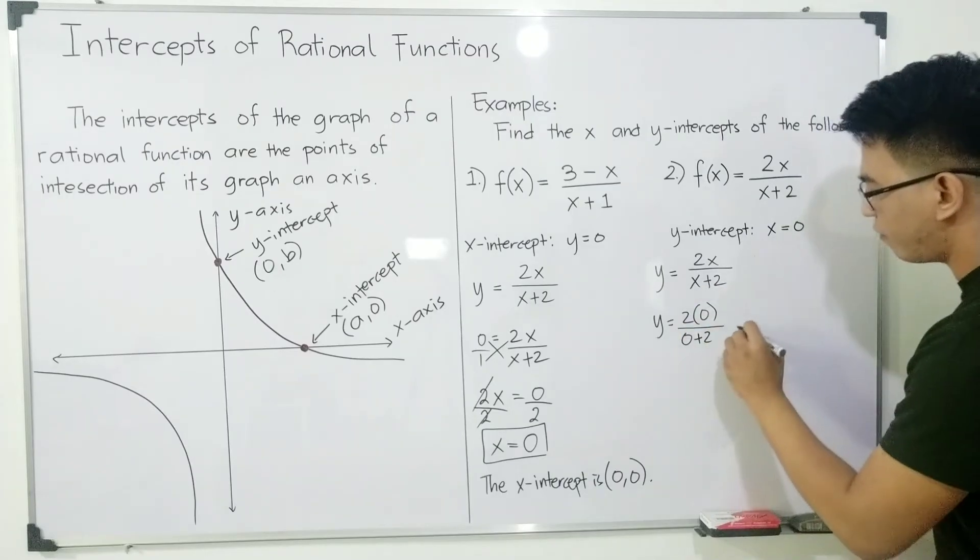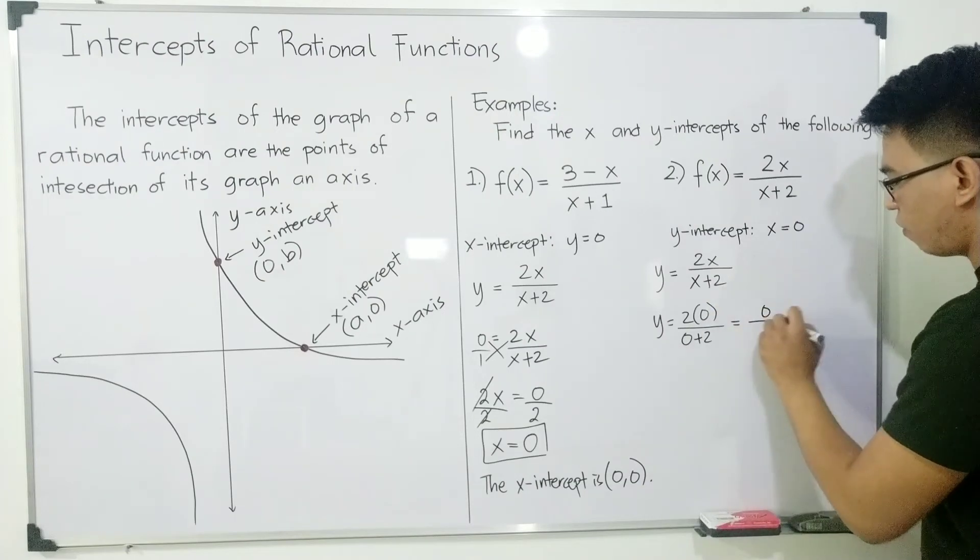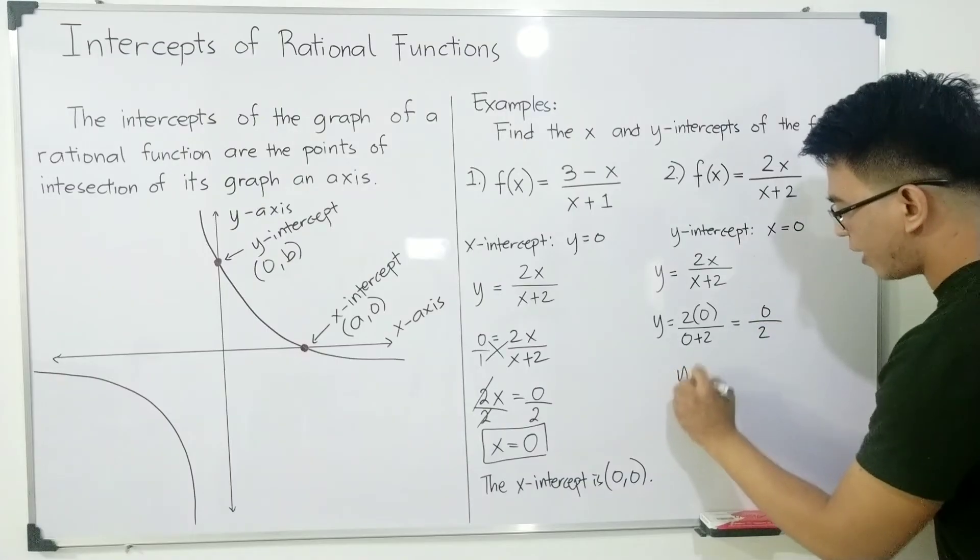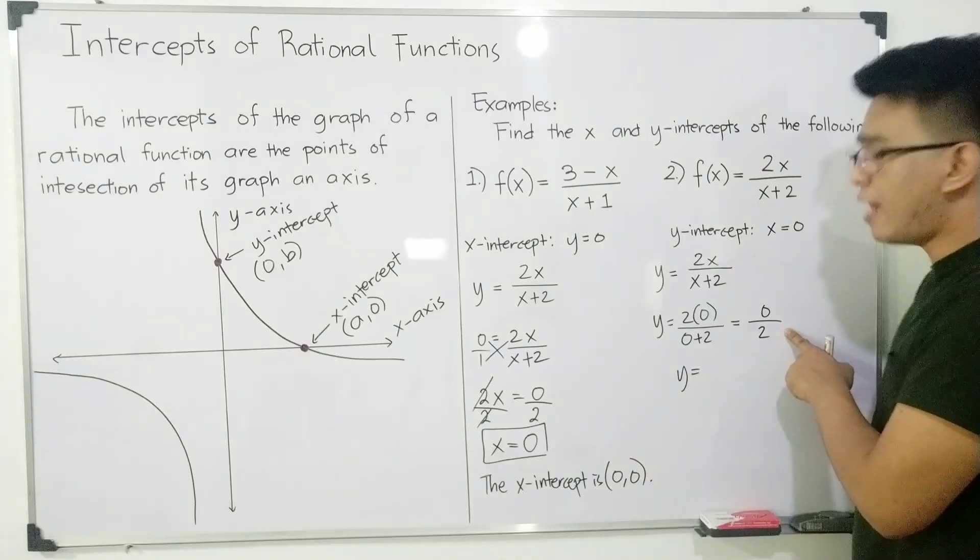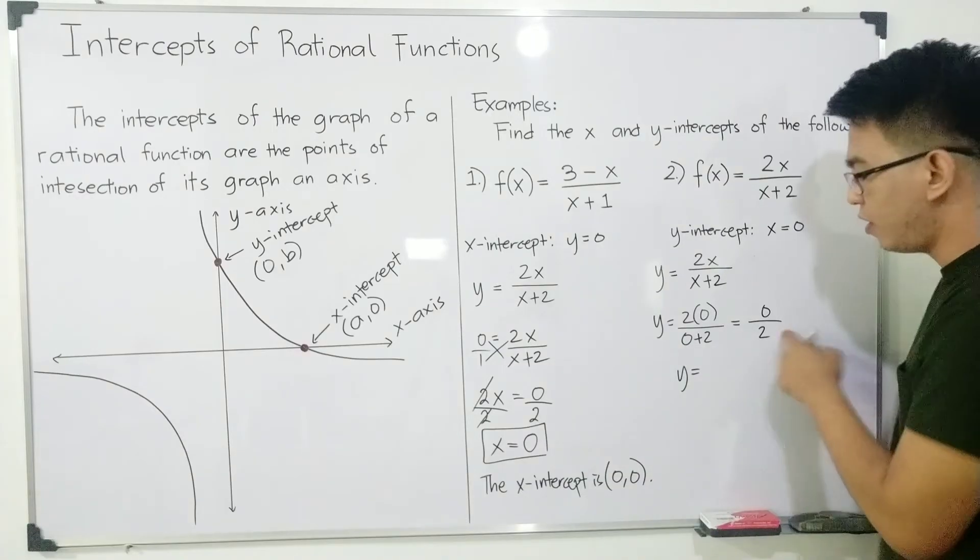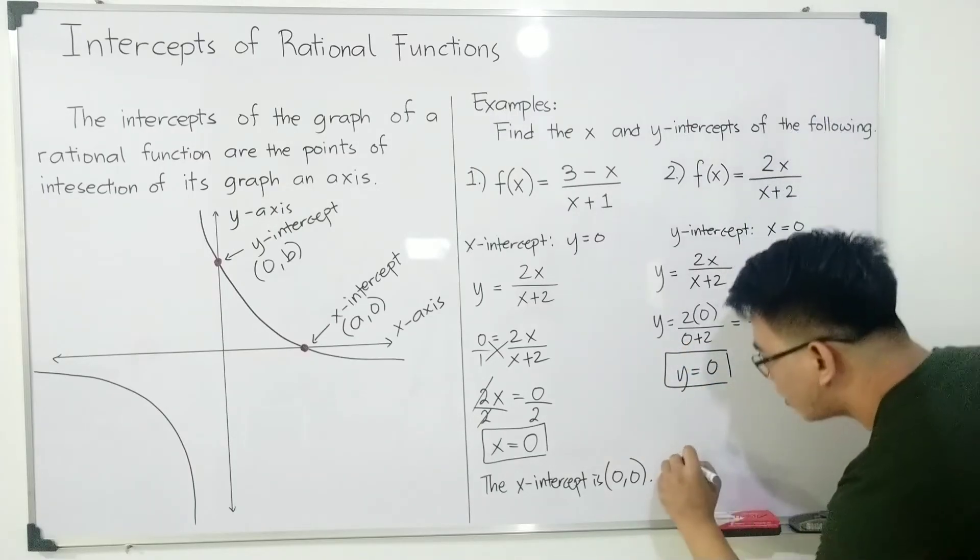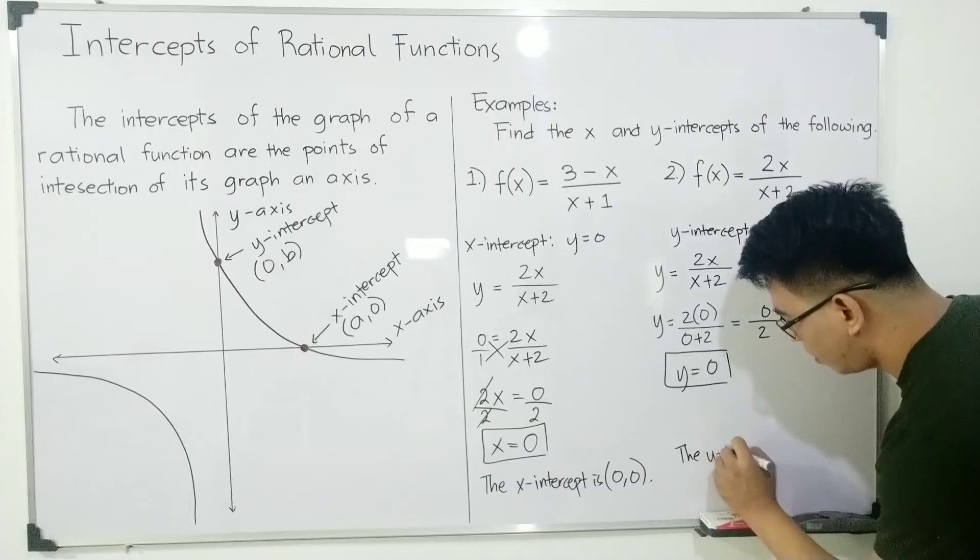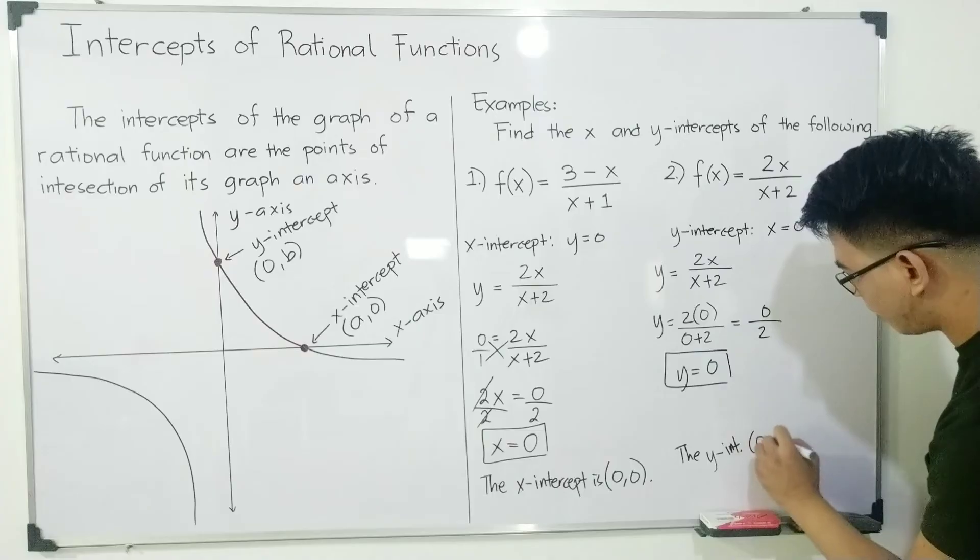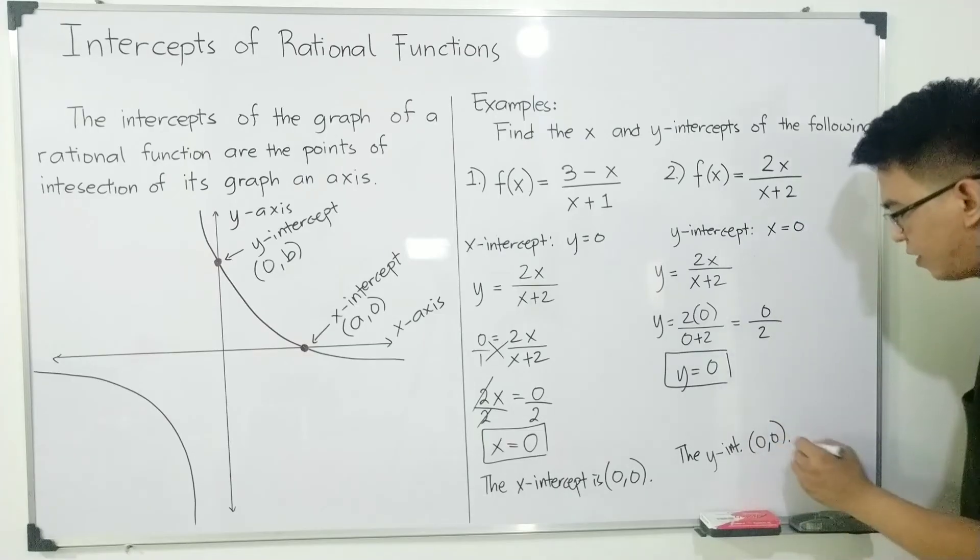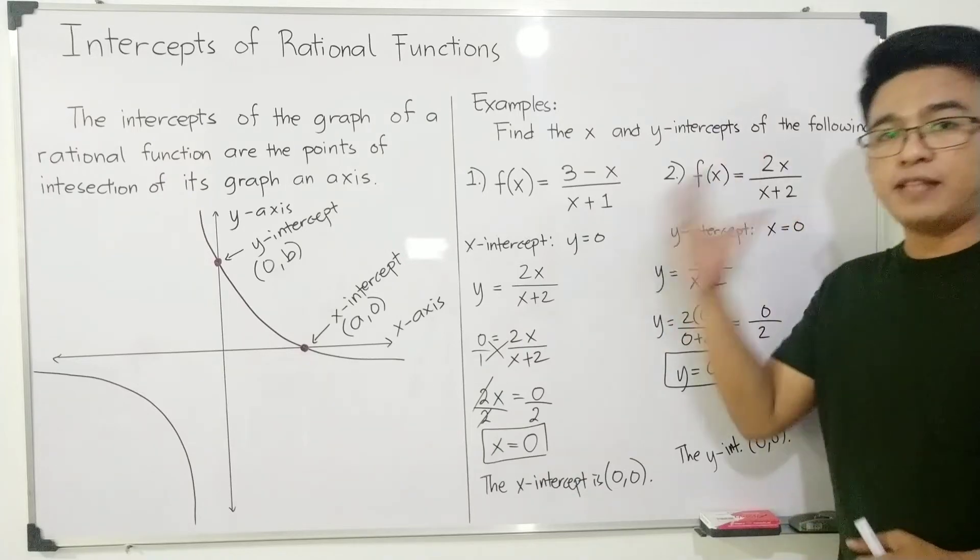Simplifying this one, it will give us 2 times 0 is 0 over 0 plus 2 is 2. Your y now is 0 divided by 2. Any number with a numerator of 0, except when denominator is 0, is equal to 0. This is now our y-intercept. So the coordinates of our y-intercept, the y-intercept is (0, 0). This is also the answer for the intercepts of this function.